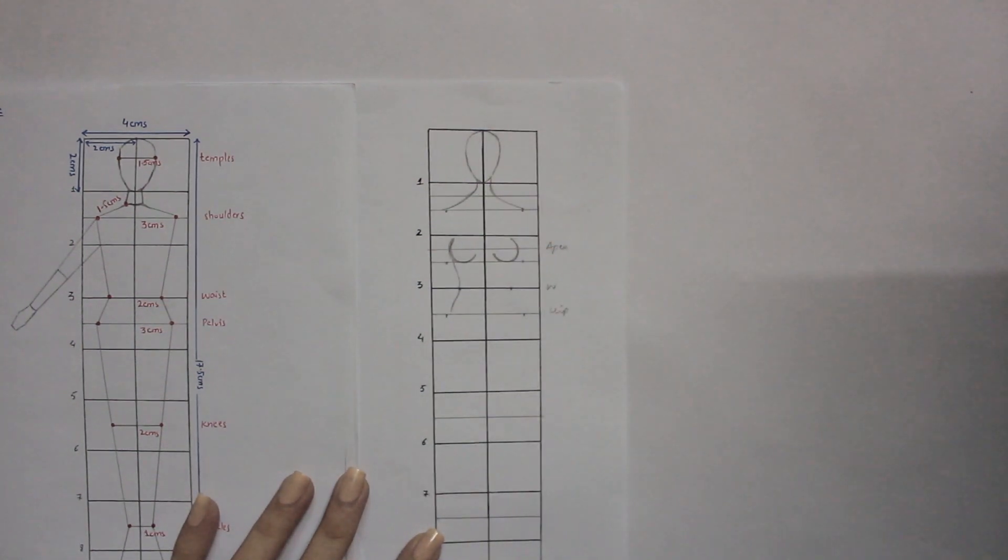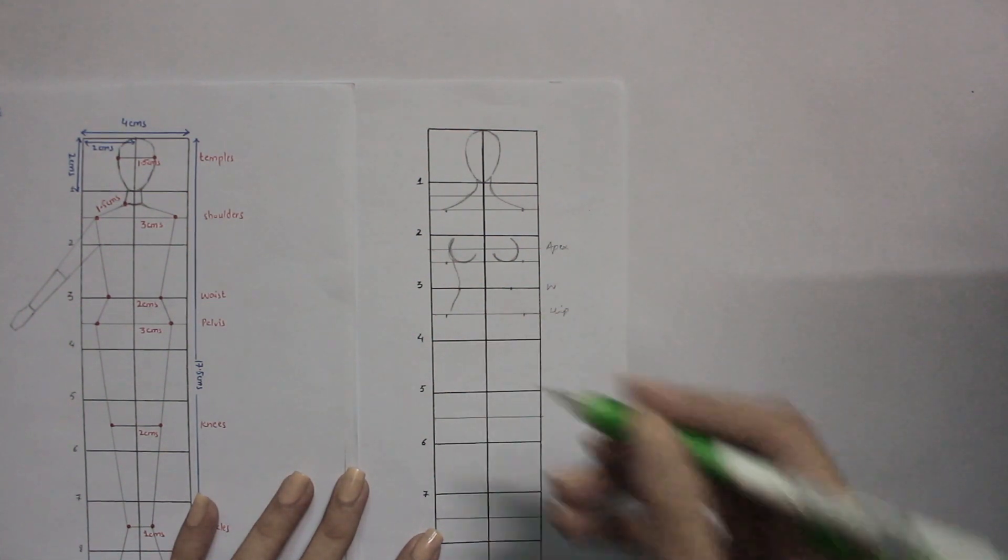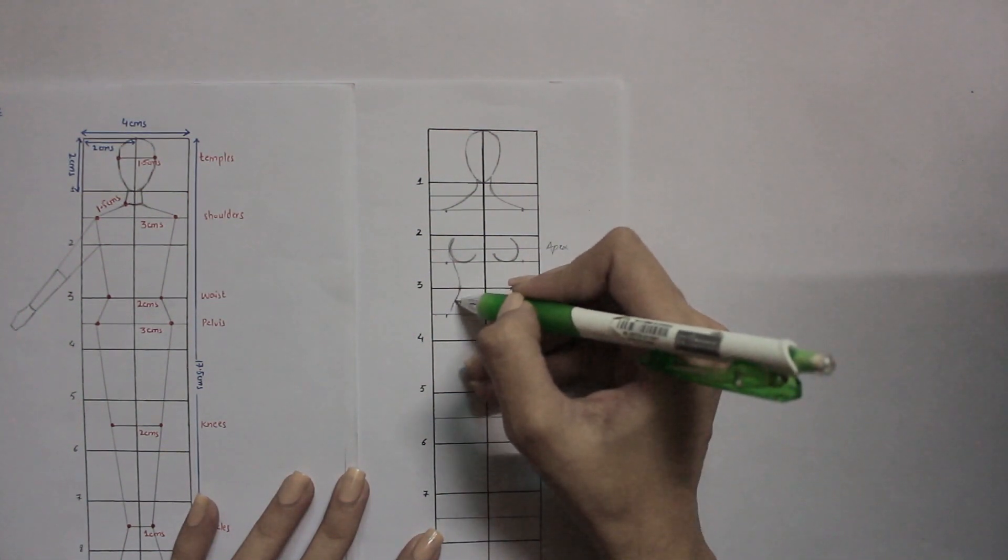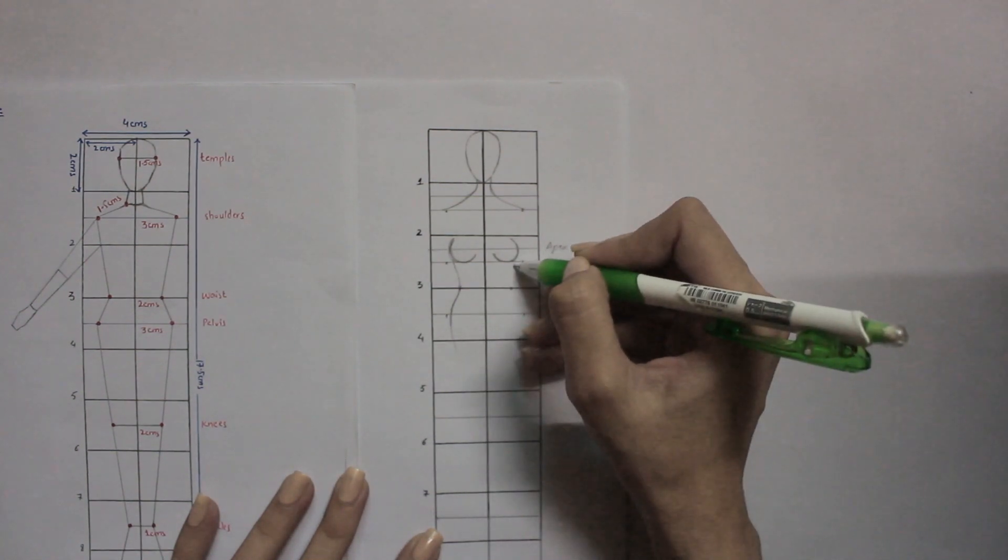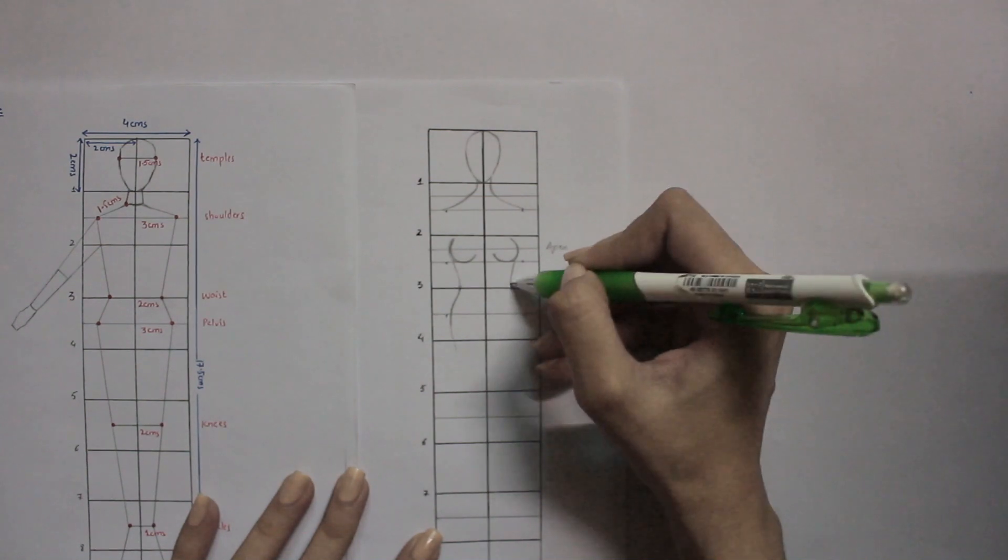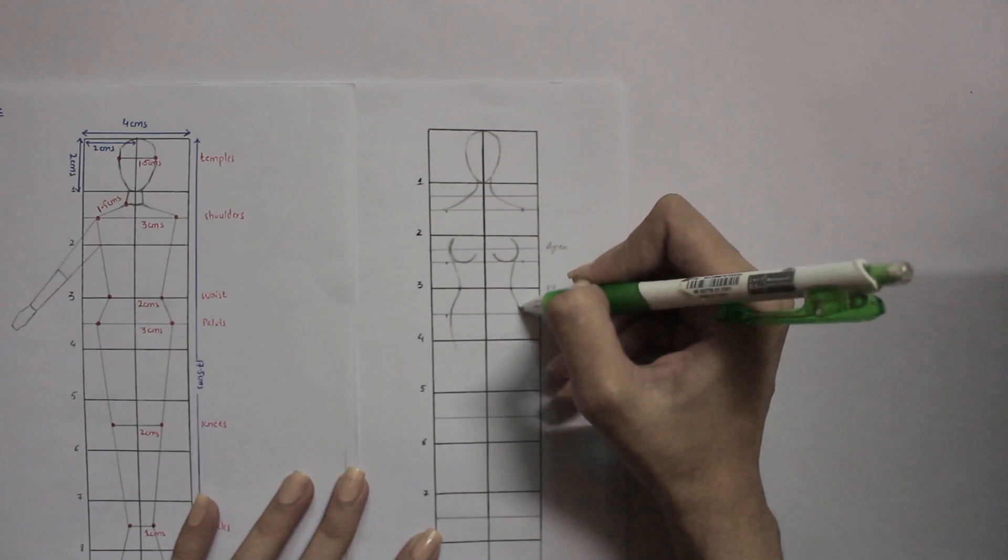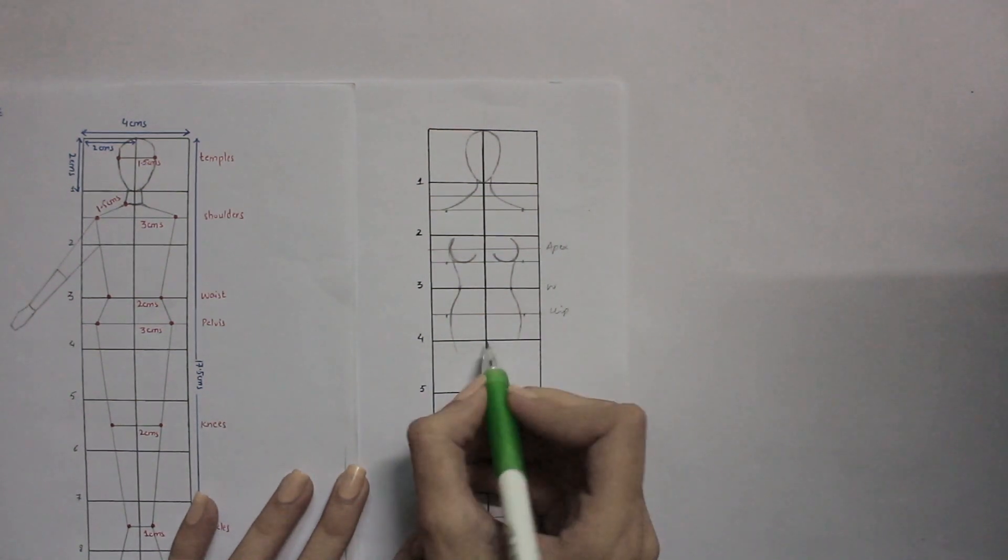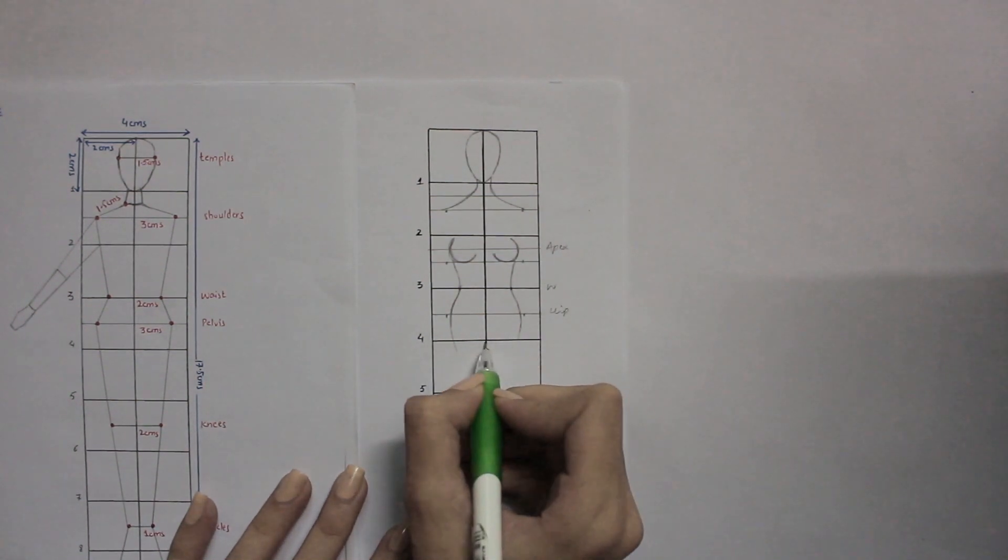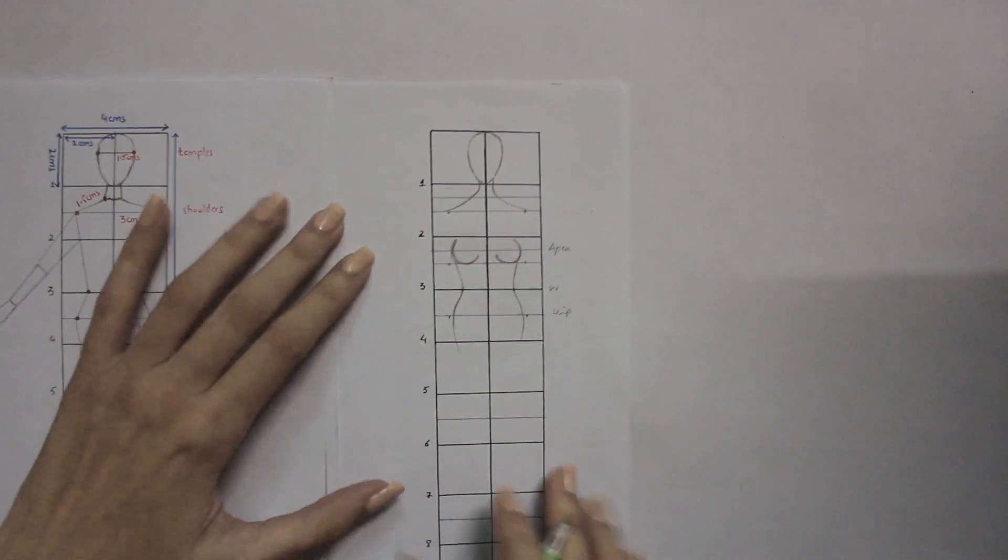Then you will match it with the waist. In fashion croquis we have to reduce the area of the waist. It has been exaggerated, so if it doesn't touch those points, then it's fine. Then you will come to the fourth head and the ending will be our crotch point.